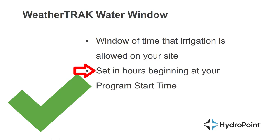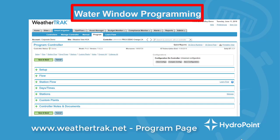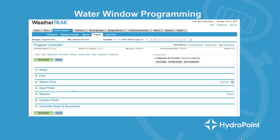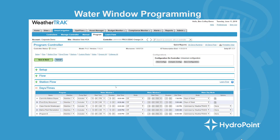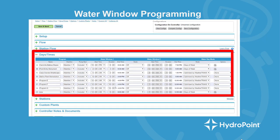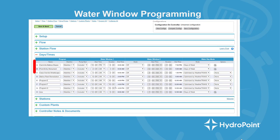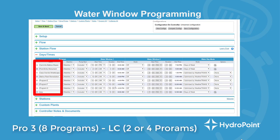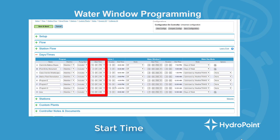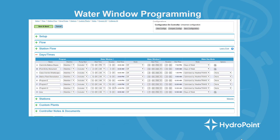To show you what that looks like, we go to weathertrack.net, go to the Smart Irrigation tab and the Program page. On that programming page, we open up Days and Times. In the Days and Times menu, you can see that when setting up the controller, you set up the days and times each program is allowed to irrigate. With WeatherTrack Pro 3 we have eight programs, and when programming the water window you give it a start time and a duration — that is the time irrigation will start and the number of hours that we can allow for irrigation.